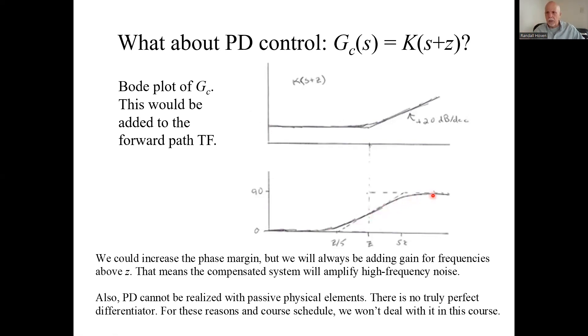This would be what we add to the forward path Bode. We would be adding 90 degrees of phase at wherever, centered at wherever we put that zero. And we'd be adding 20 dB per decade in slope. This is kind of bad because it goes up forever, which means we'd be letting in more high frequency noise than maybe we want to.